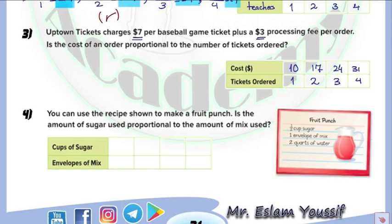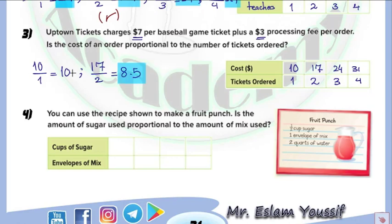Now we find if this relation is proportional. The first rate: 10 divided by 1 equals 10. The second rate: 17 divided by 2 equals 8.5. Since the two rates are not equal, this relation is not a proportional relationship.